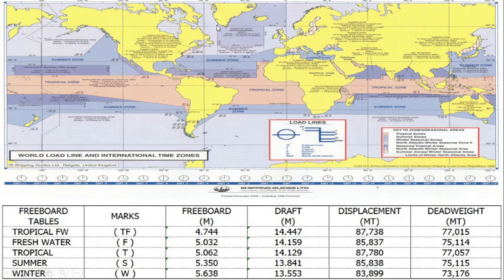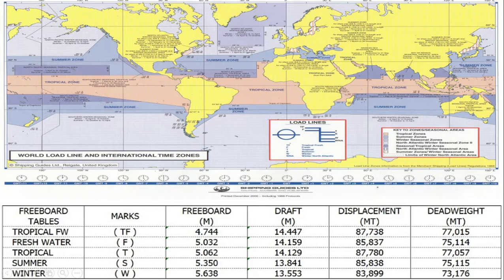The world load line chart looks like this — you can find this on the bridge. Please take time to explore and read the instructions there. It uses color codes designated for seasonal areas: summer zone, tropical zone, winter, and so forth. There are seasonal areas and months you need to know.